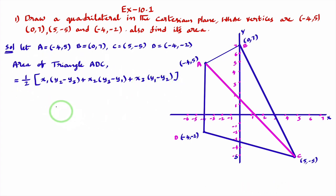What I'll do now, I'll consider A as x1 y1. D as x2 y2. C as x3 y3. What I'll do now, these values I'll substitute in this formula. Half into, I just substituted these values in this formula.